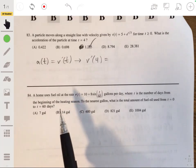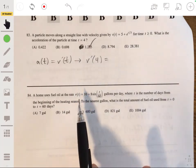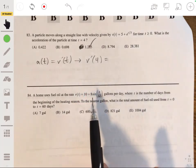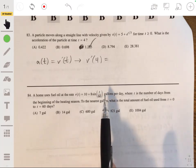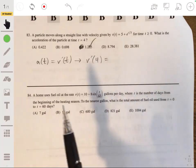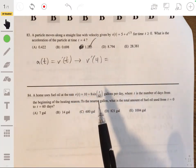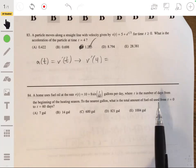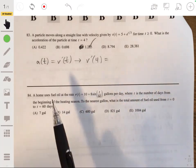84, a home uses fuel oil at the rate r(t) equals 10 plus 8 sine of t over 60 gallons per day, where t is the number of days from the beginning of the heating season. To the nearest gallon, what is the total amount of fuel used from t equals 0 to t equals 60 days?